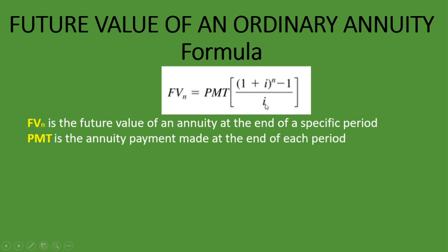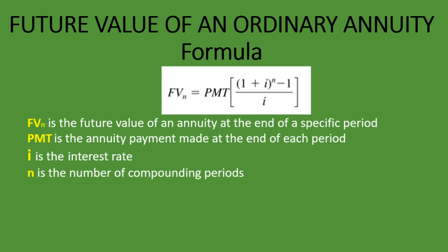And then 1 plus I — what is the I? I is the interest rate, and your formula might use the letter R, which is also fine; it's the exact same thing. I or R is the interest rate you're given. And then to the power of N — N is the number of compounding periods. N is not necessarily the number of years; it's the number of compounding periods depending on how many times it's compounded per year. Then you minus 1 and divide by I, which is the interest rate.